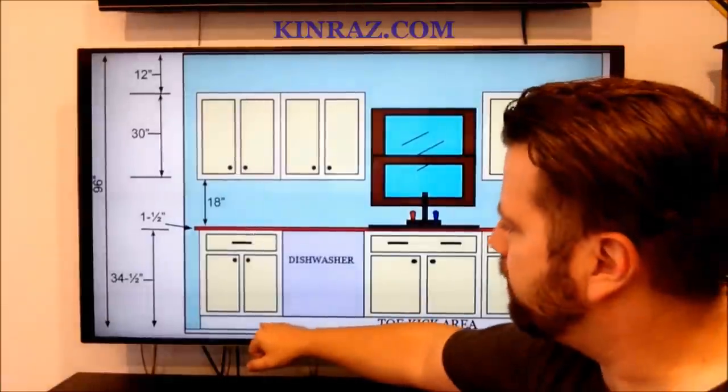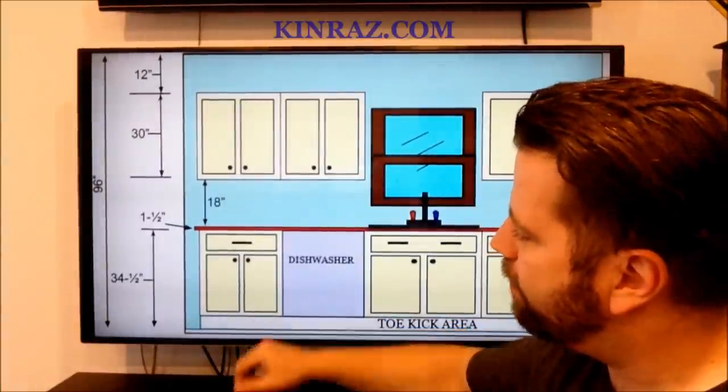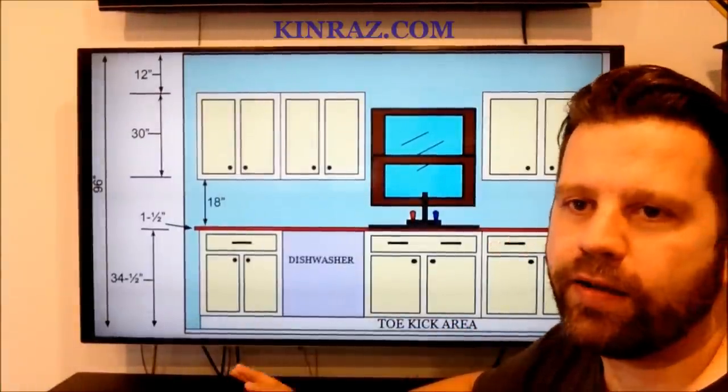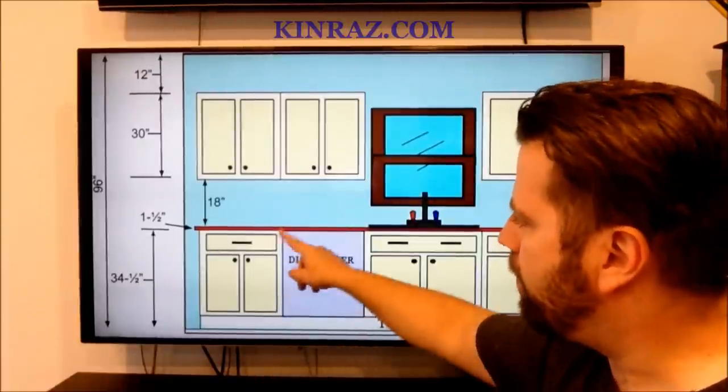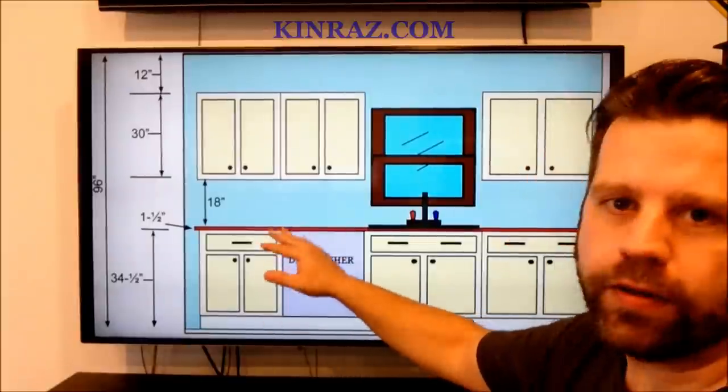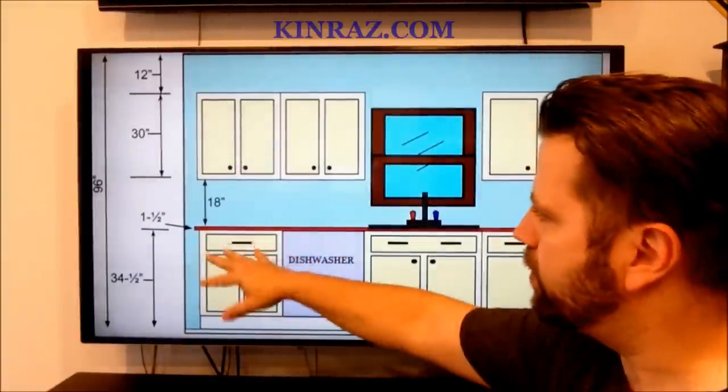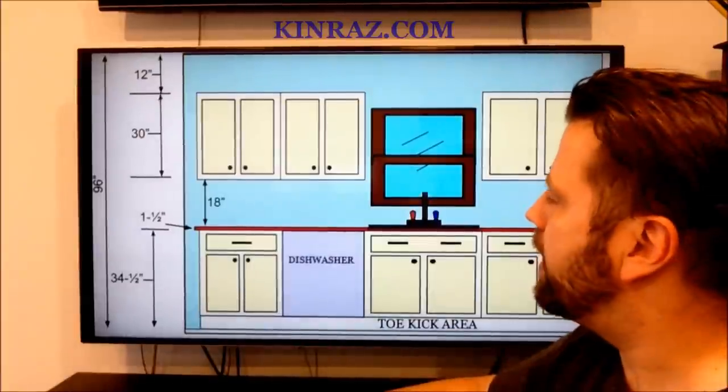Now down here is your toe kick space. You have generally about a four and a half inch tall space. Your cabinet frames will be 30 inches tall, but there's really no need to worry about that. Right now we're just covering the basics of a layout.